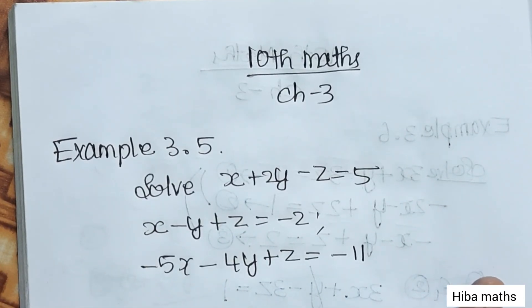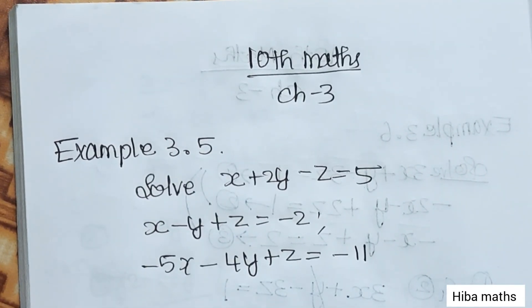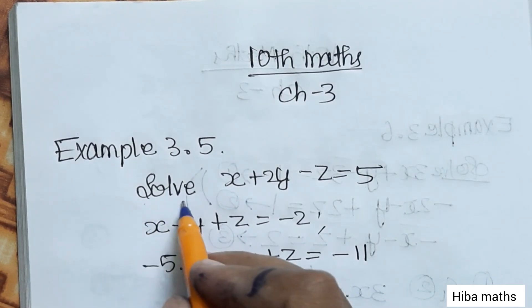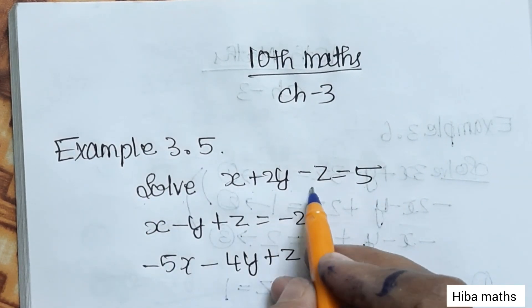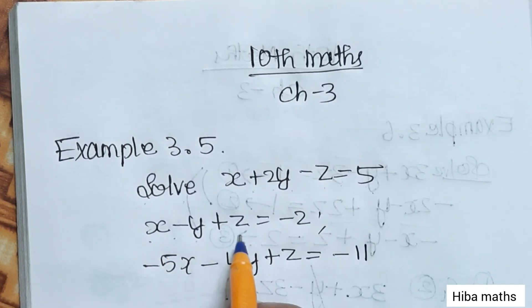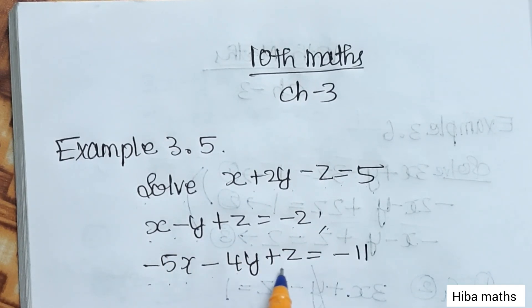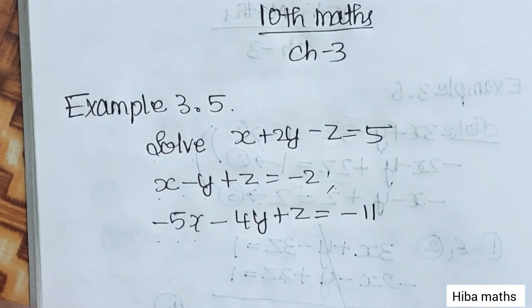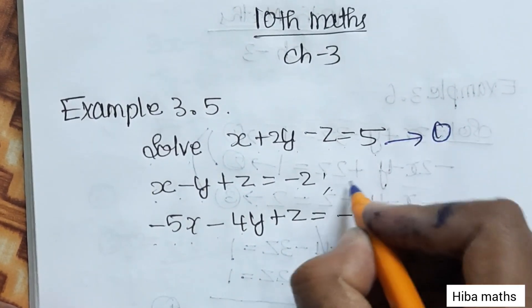Hello students, welcome to Hiba Maths, 10th Standard Maths, Chapter 3, Example 3.5. Solve: x plus 2y minus z equals 5, x minus y plus z equals minus 2, minus 5x minus 4y plus z equals minus 11.